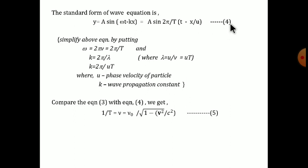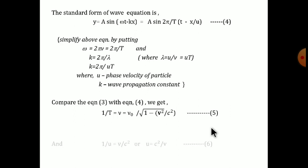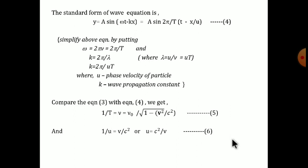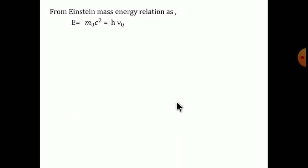Comparing the earlier equation with the standard wave equation, we match the coefficients of t and x. From the coefficient of t, the frequency nu equals nu-zero divided by the square root of one minus v-squared over c-squared. From the coefficient of x, we get one over u equals v over c-squared, which simplifies to u equals c-squared over v. Before substituting these, we use Einstein's mass-energy relation: E equals m-zero c-squared, where m-zero is the rest mass and c is the speed of light.